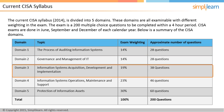Domain 3 covers information systems acquisition, implementation, and development, and accounts for 19% of the CISA exam. Domain 4 covers information systems operations, support, and maintenance, and accounts for 23% of the CISA exam.